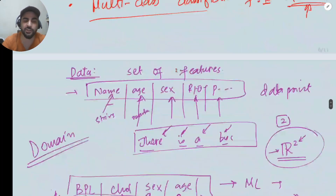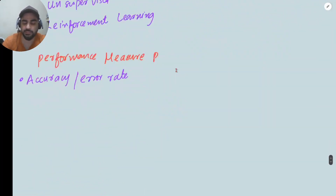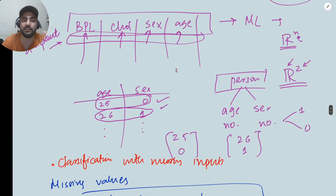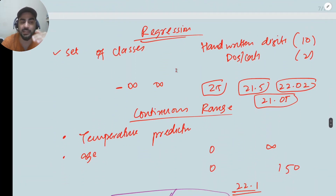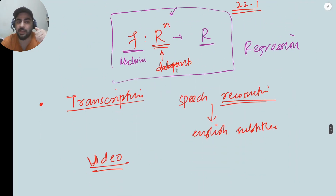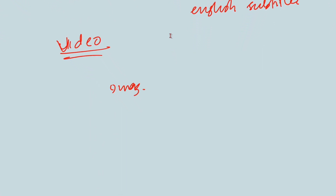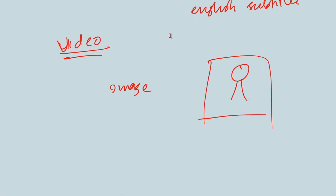Then we have structured output. We saw classification — binary and multiple classification — then regression, then transcription, then machine translation, and structured output. In structured output, you have to give a structure to the output. For example, if you have to construct an image of a person, there is a structure: the face, the tongue position — everything has its right place. So the structure in the image is very important and the machine must understand that structure. Structured output is a necessary task.